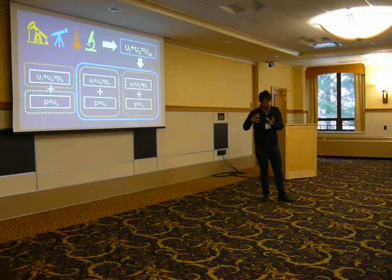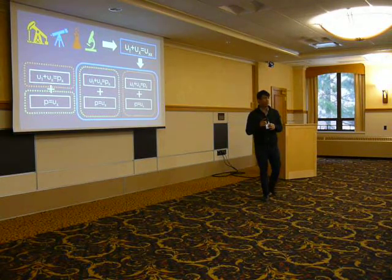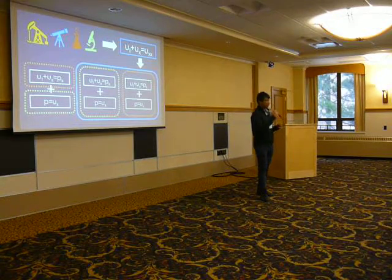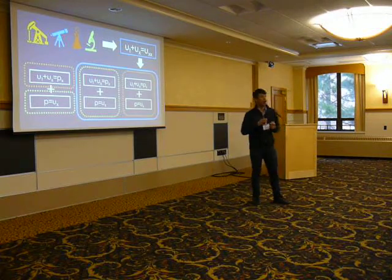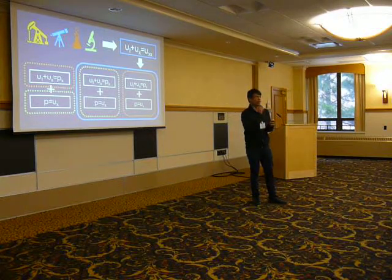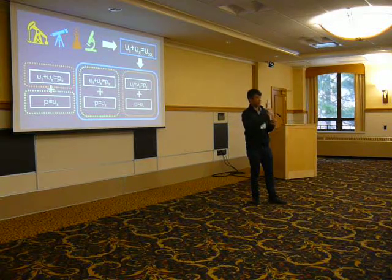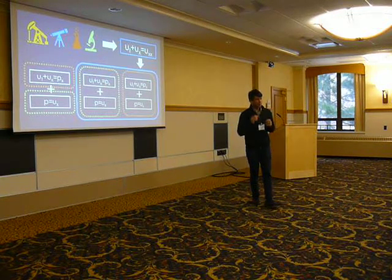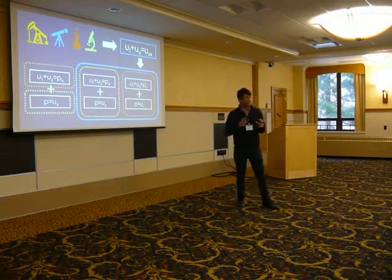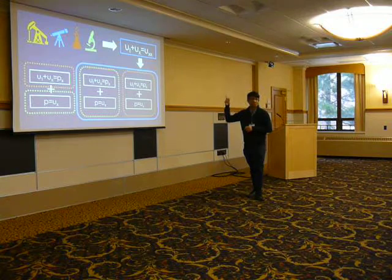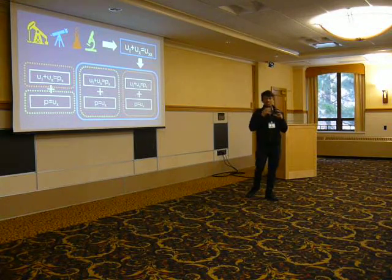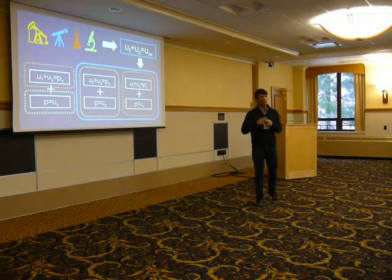Moreover, in biology, mathematical models are used to describe the dynamics of species. These equations can be very complicated, but the common thing is they all have the same form — we call it the convection-diffusion equation. This equation has two different parts.